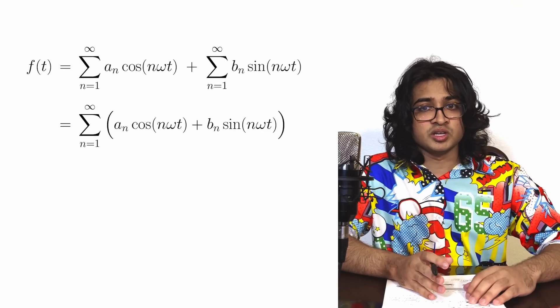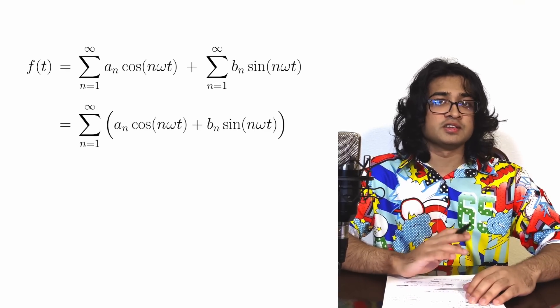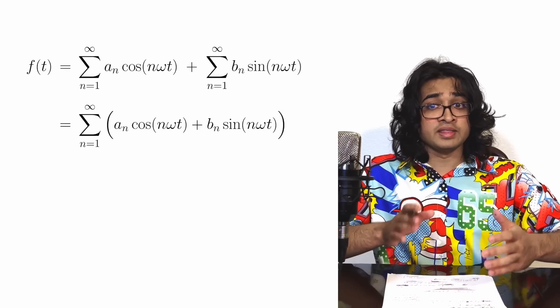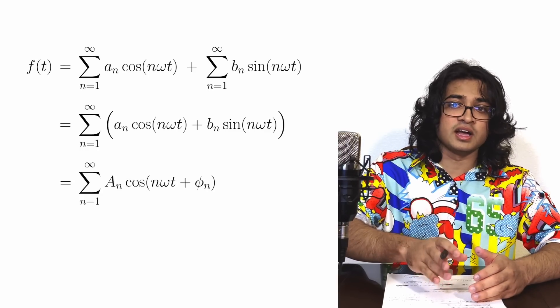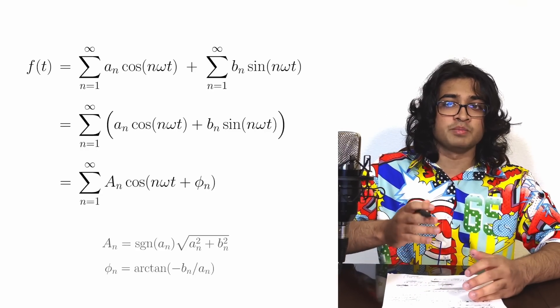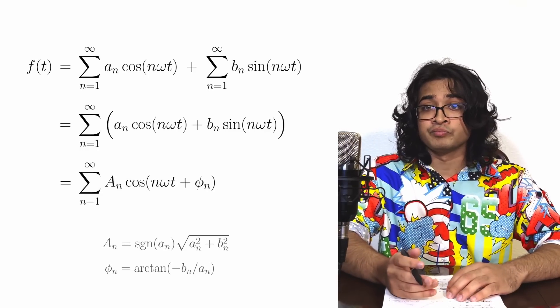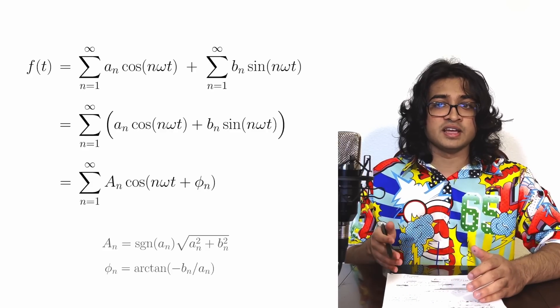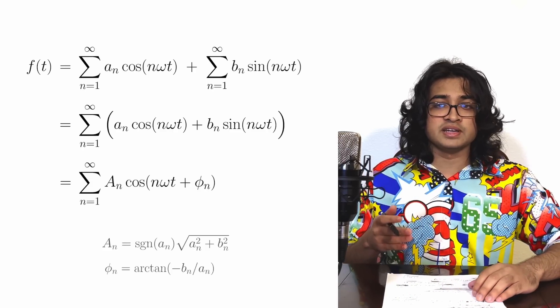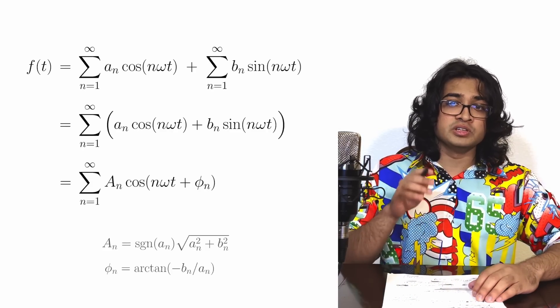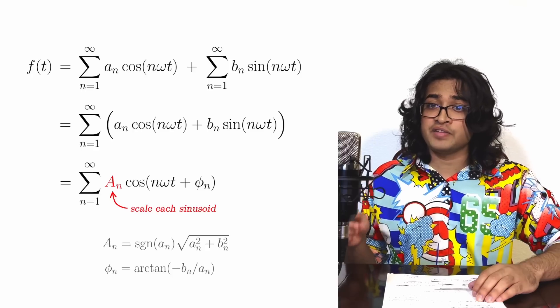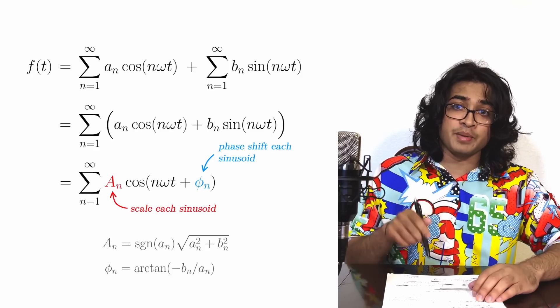If we combine the two sums, we get a linear combination of a sine and a cosine. And that's just the same thing as a single cosine with an amplitude and phase determined by the original coefficients. So what Fourier analysis says is that any signal can be broken down into sinusoids, but you need to know how to scale and how to phase shift each one before combining them together.